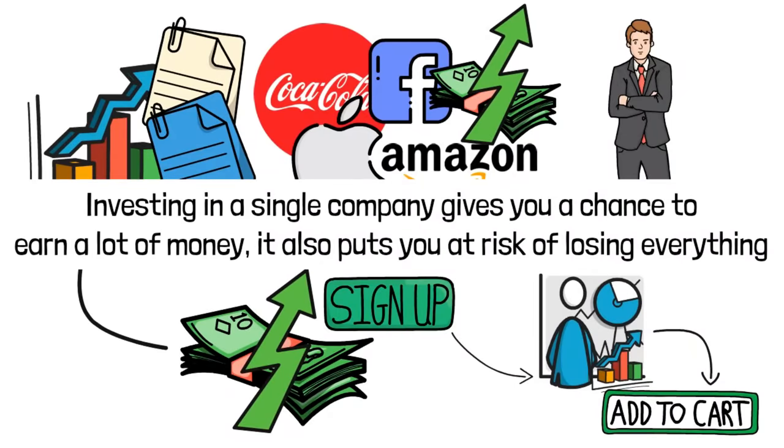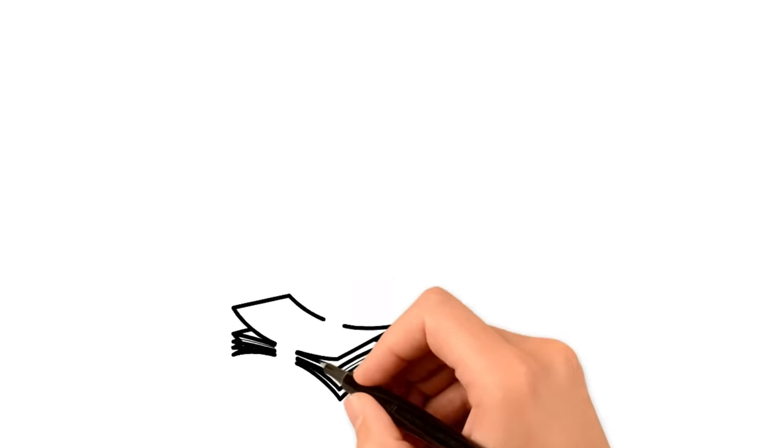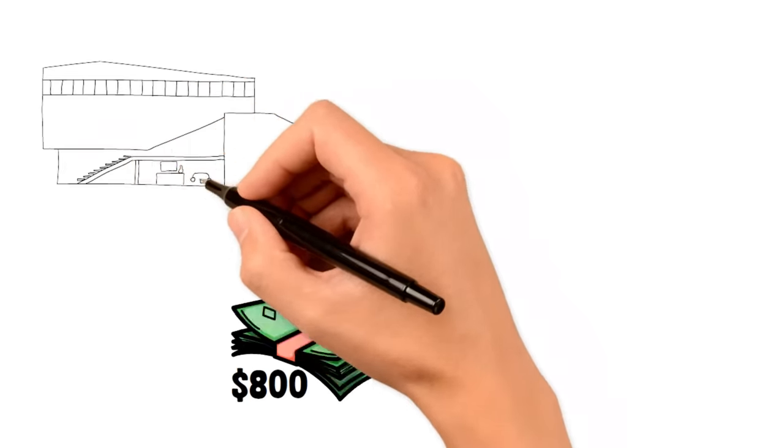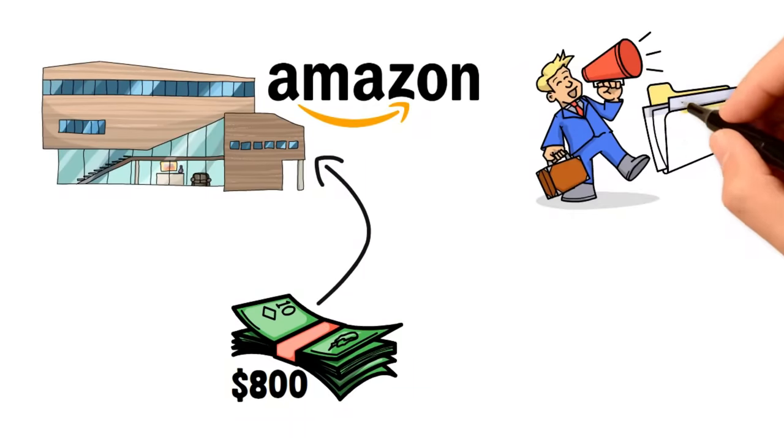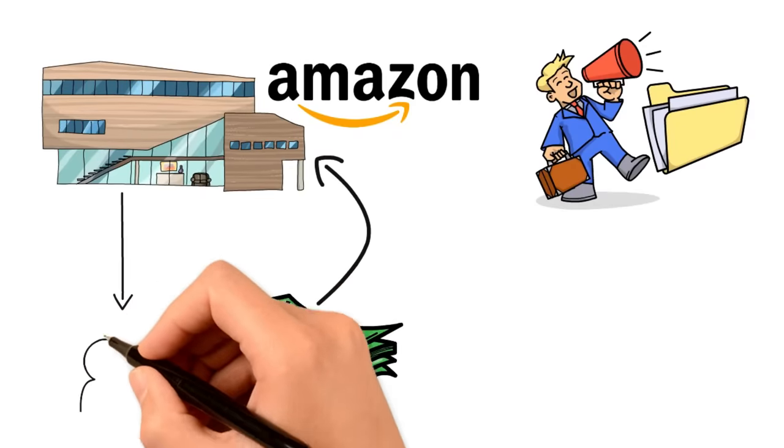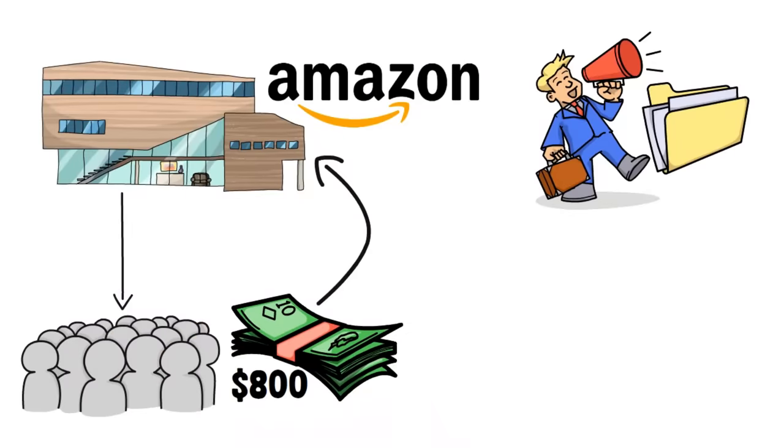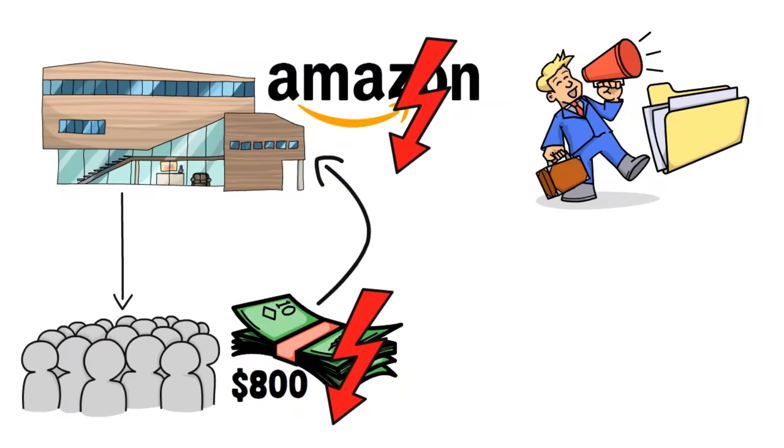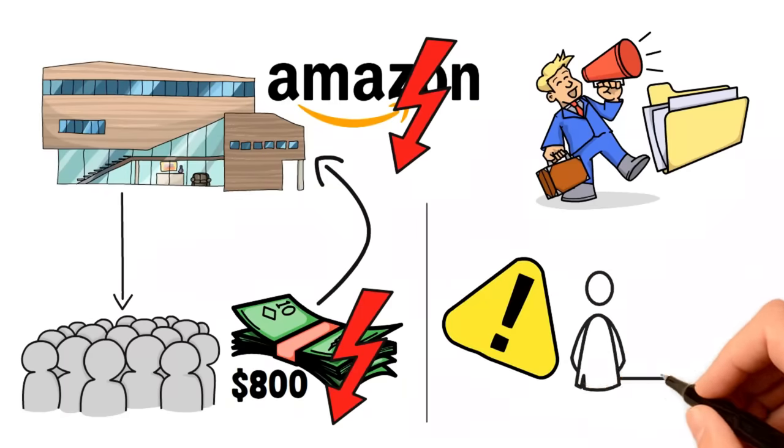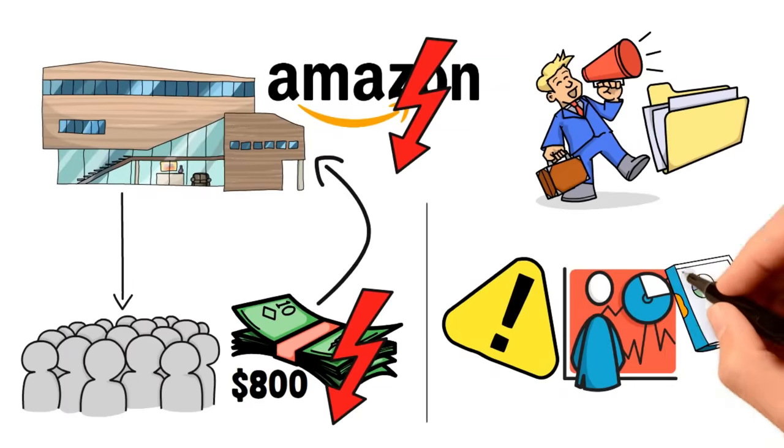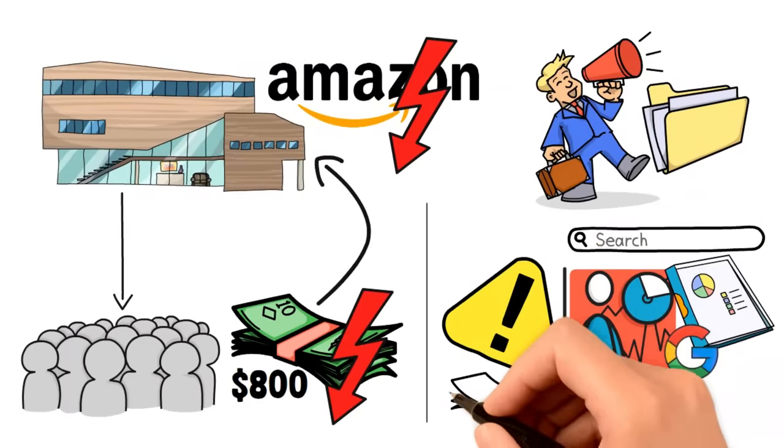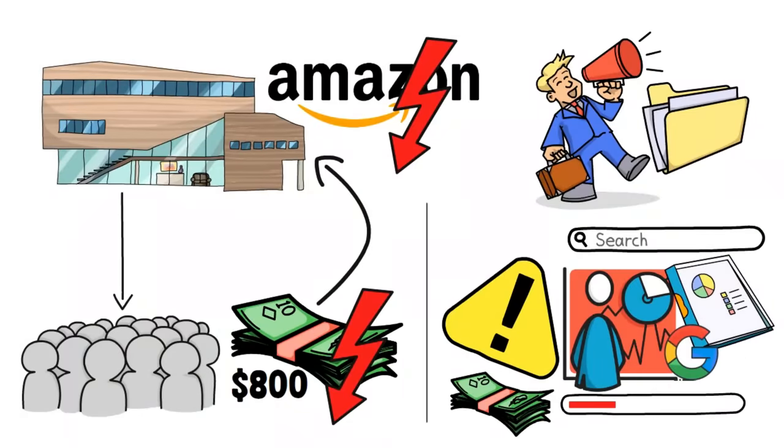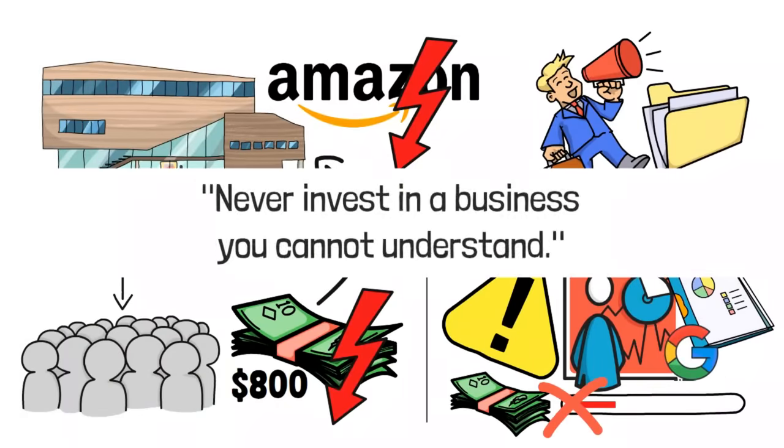But here's the thing. While investing in a single company gives you a chance to earn a lot of money, it also puts you at the risk of losing everything if the stocks depreciate or if the company goes bankrupt. For instance, let's say you put your $800 in Amazon, and then a few days later, Jeff Bezos announces a new policy that customers and company investors do not like, causing them to leave Amazon and patronize others. This will make the company's stock prices crash, and investors like you could end up losing everything. This is why financial experts like Warren Buffett would advise you to take the time to study companies and do a lot of research, so you don't pick a company that ends up sending all your hard-earned money down the drain.